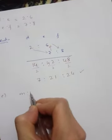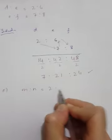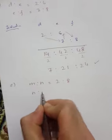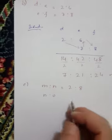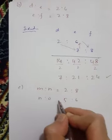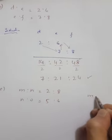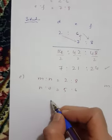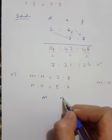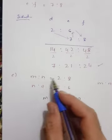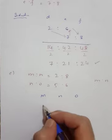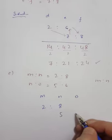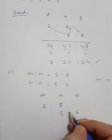Part c: m ratio n equals 2 ratio 8, and n ratio o equals 5 ratio 6. Write m ratio n ratio o.